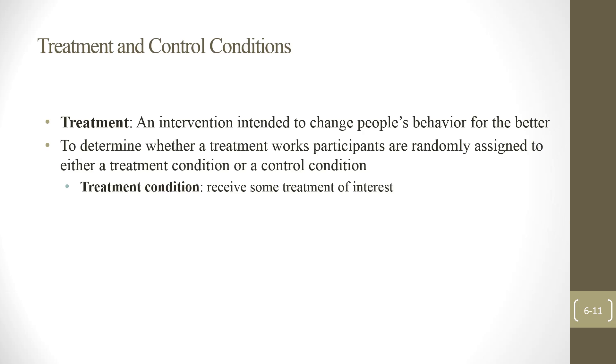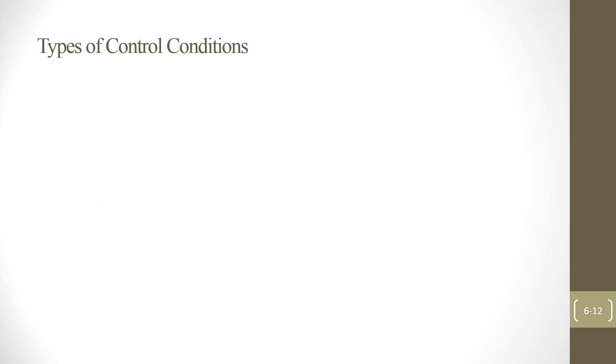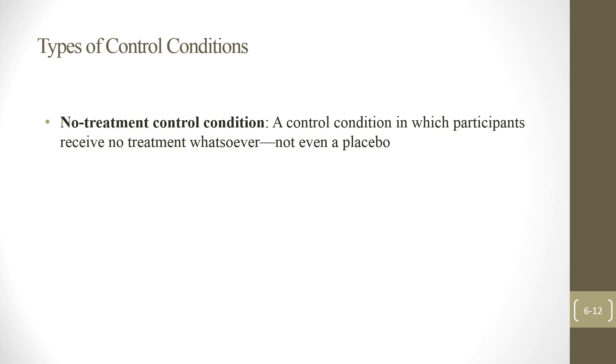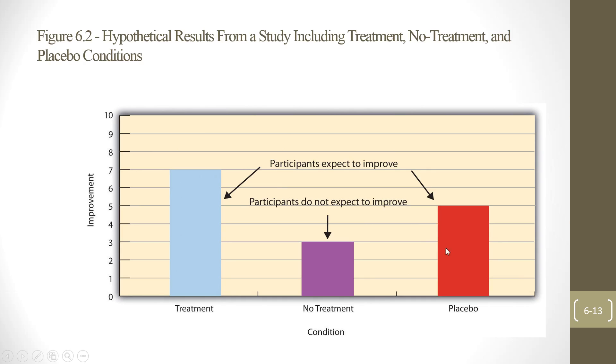Treatment condition receives some treatment of interest, no problem. But control condition can be a little tricky. Generally speaking, people in the control condition don't receive treatment. But there are different types of control conditions. First is no-treatment control condition: participants receive no treatment whatsoever, not even a placebo. Placebo is a treatment that lacks any active ingredient or elements that should make it effective. The idea is treatment should improve the most, placebo later because of the placebo effect, and people who don't receive treatment at all should improve the least.